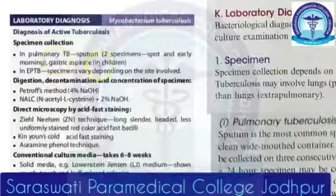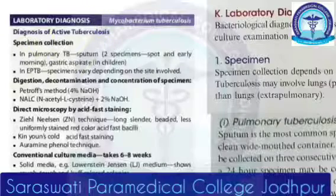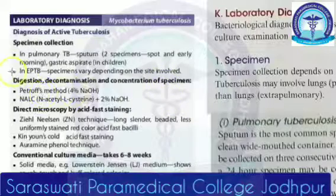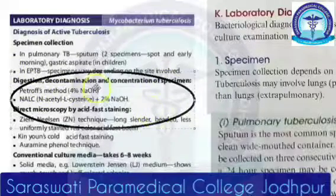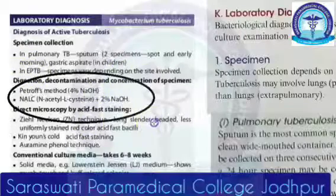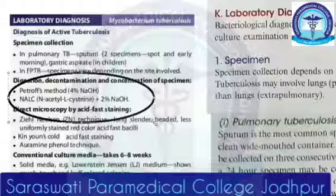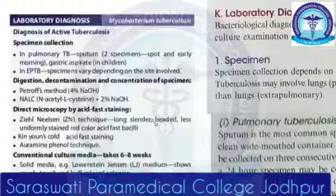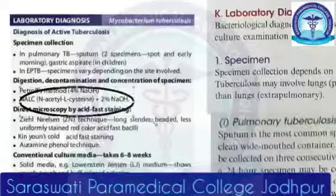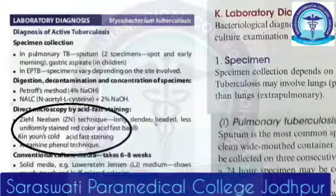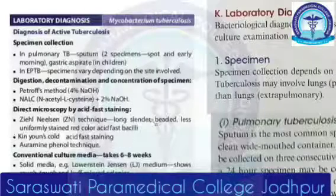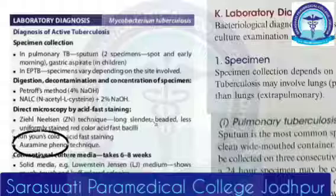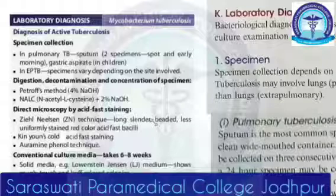Let us revise. Laboratory diagnosis of pulmonary tuberculosis: first we collect the specimen — sputum, two specimens. Then for digestion, decontamination, and concentration, we use Petroff's method and NALC — N-acetyl-L-cysteine with 2% NaOH. Then you have direct microscopy using the Ziehl-Neelsen technique; you have to draw the diagram.